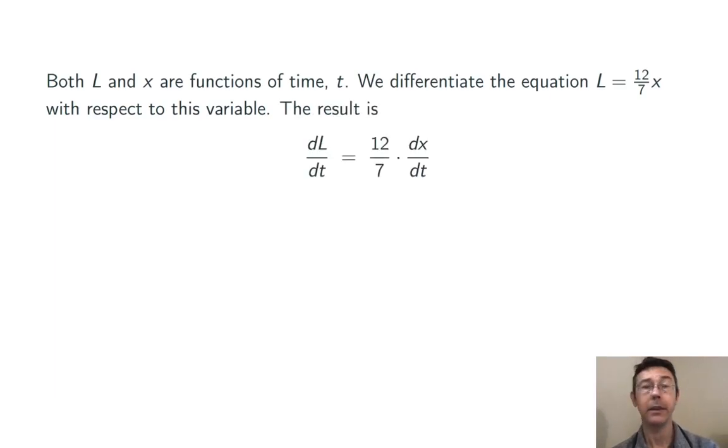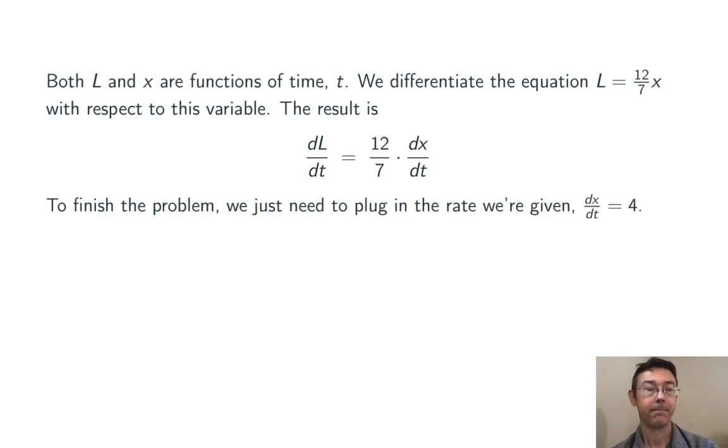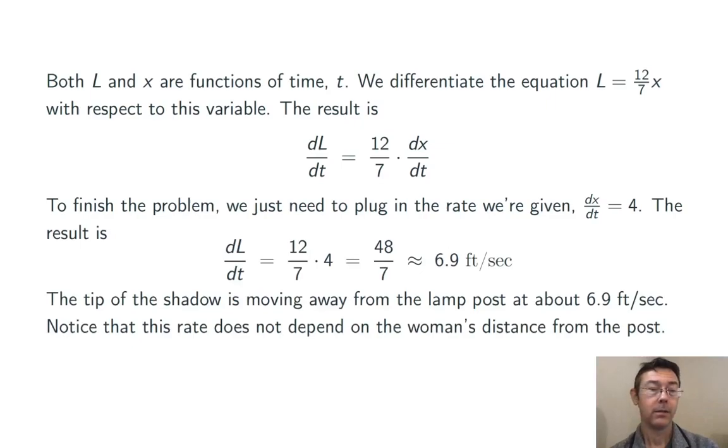In this case the calculation is fairly simple. dL/dt is 12 sevenths dx/dt. Now we just need to plug in the rate that we're given, dx/dt equals 4. Plugging that in we get 48 sevenths, about 6.9 feet per second. That's the rate at which the tip of the shadow is moving away from the lamp post.